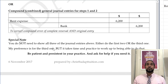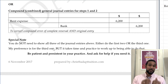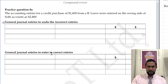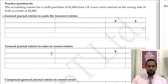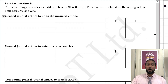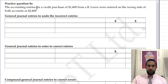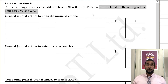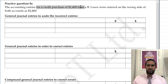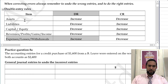So let's scroll down and we're going to give you guys a couple of tries. Let's take a look at practice question 8A. I'm going to take a pause — take a read and try the question. It says that the accounting entries for a credit purchase of 1,600 from BLEAF were entered on the wrong side of both accounts as 2,400. So a credit purchase — what was supposed to be the debit for a credit purchase? Let's go up to the double entry rules.